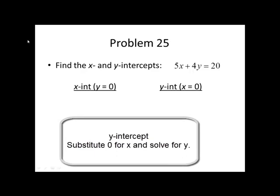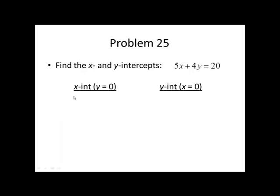Let's go ahead and take a look at the x-intercept. We'll begin by putting in 0 for y. When we do that, 4 times 0 is 0. So the y-term essentially falls out, and we're left with 5x equals 20. Divide both sides by 5, and we get x equals 4. So the x-intercept is the ordered pair 4 comma 0, x first, y second.